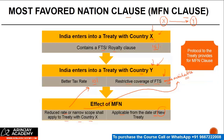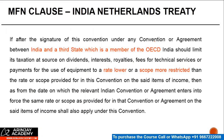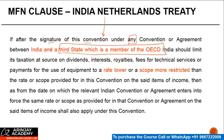Normally, the MFN clause is found in the protocol to the treaty. Let's look at one of the MFN clauses. If after the signature of this convention — which is the treaty between India and Netherlands — under any convention, any treaty or agreement between India and a third state which is a member of the OECD. Which means that if India enters into a treaty with a non-OECD country and that contains some better clauses, those will not automatically apply here. It's only a treaty with the OECD countries.